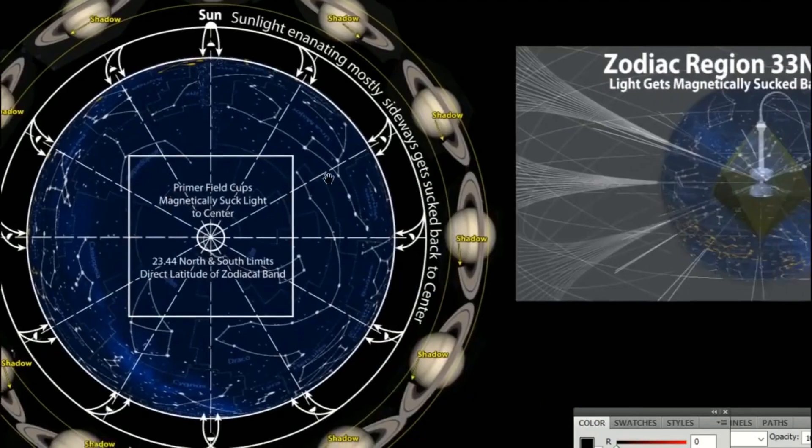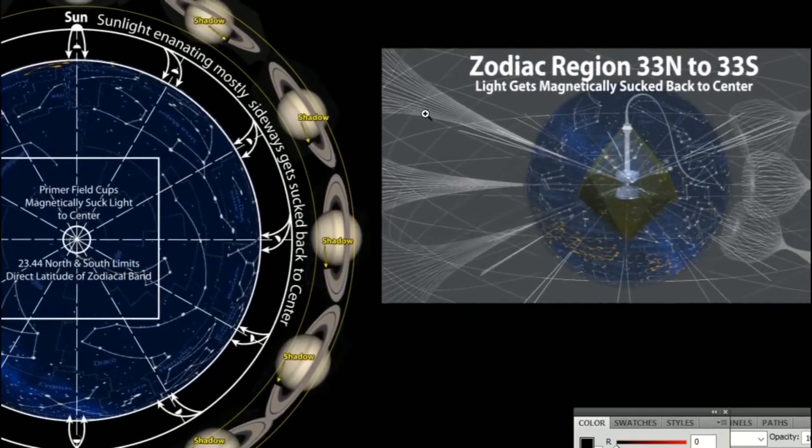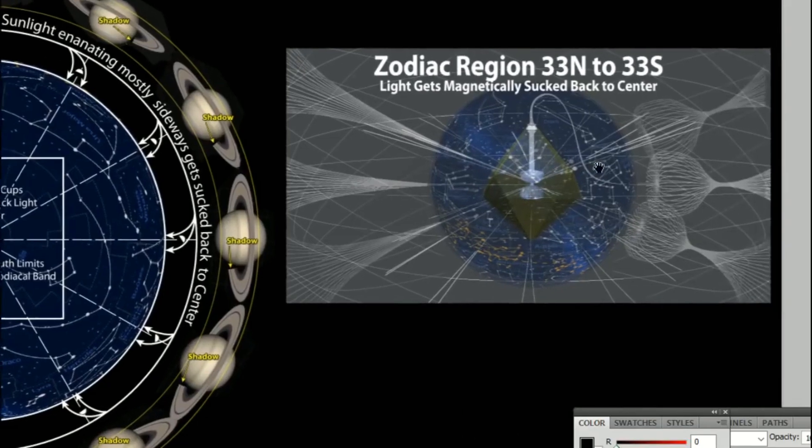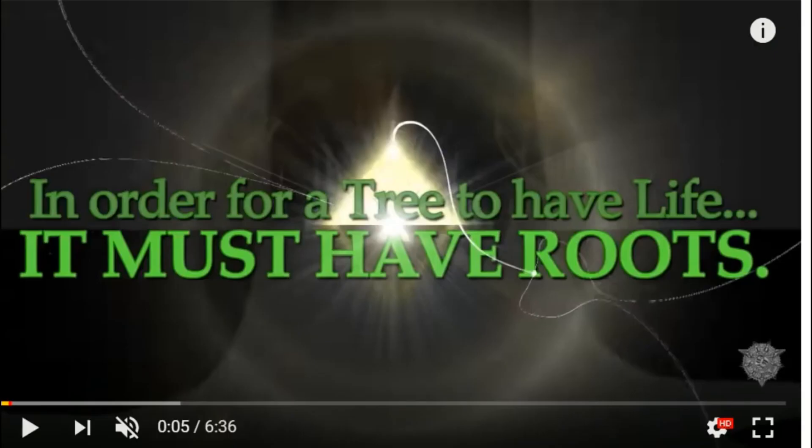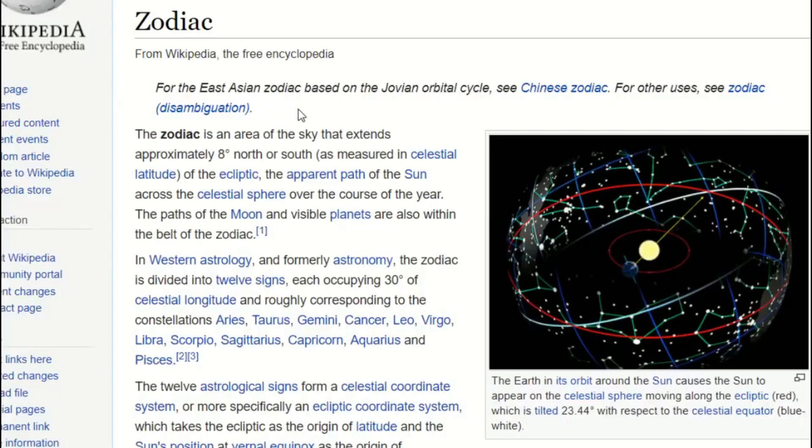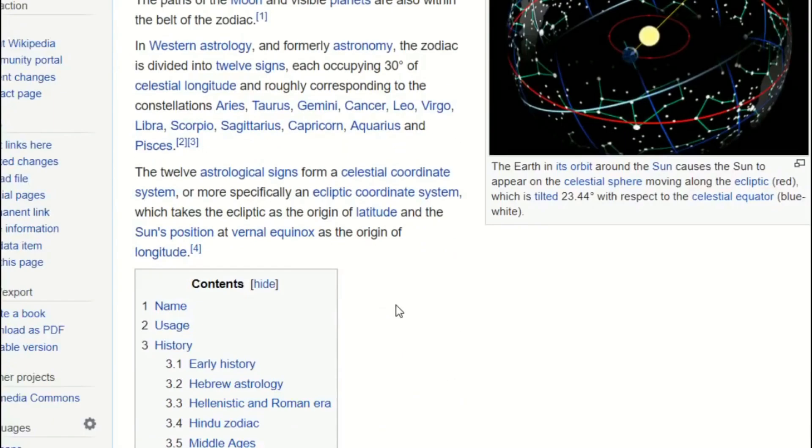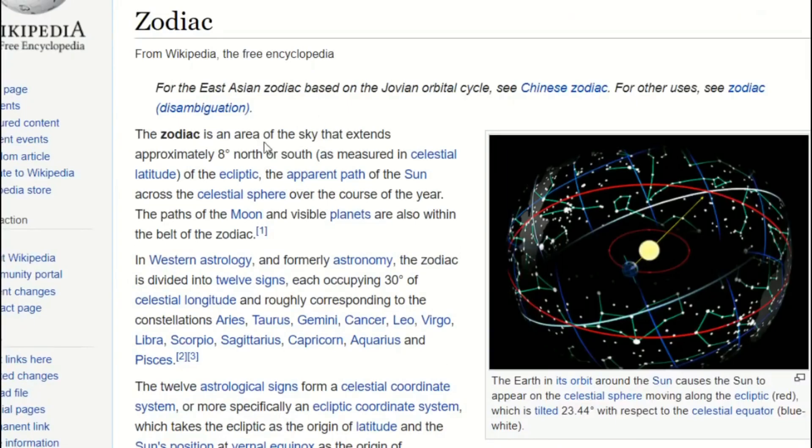Obviously, the ecliptic is going to be 23.4 north to 23.4 south. But because it flares out like that at the end, the moon sphere is going to be 5 degrees more, plus or minus, than the Sun as far as latitude goes. That's why we get a higher zone at 23.4 with the zodiacal zone. Wikipedia talks about the zodiacal zone, 8 degrees north and south of the ecliptic.